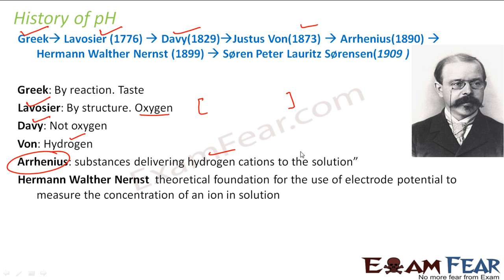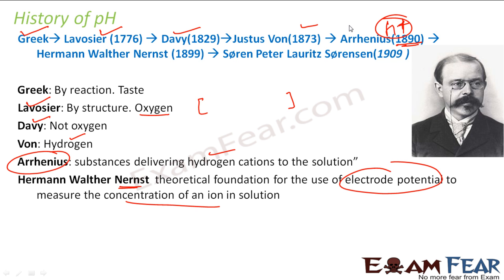With Arrhenius, we had a good definition: anything which gives H+ ions is an acid. By 1900, the scientific community was very much confirmed that hydrogen ions are responsible for the acidic nature. Then a scientist did a theoretical foundation for the use of electrode potential to measure the concentration of hydrogen ions — because it is the concentration of hydrogen ions which defines the strength of acid. How do you find that HCl has more concentration of hydronium ions than another acid? He gave a theoretical foundation for that measurement.